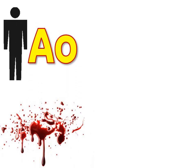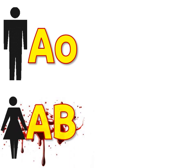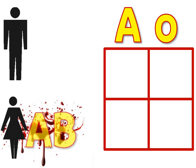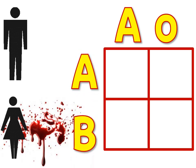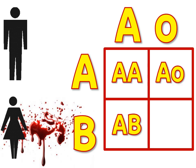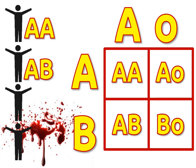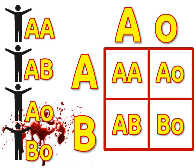Now let's look at a Punnett square where the dad has blood type A and your mother has blood type AB. As we line up the Punnett square, we need to fill in the insides to see the possibilities of the children. In this case, one in four children would have blood type AA. One in four would have inherited both dominant genes and have blood type AB. One in four would inherit one dominant A and one recessive O, but they would also have blood type A. And the last child would have blood type B because they inherited that one dominant trait.